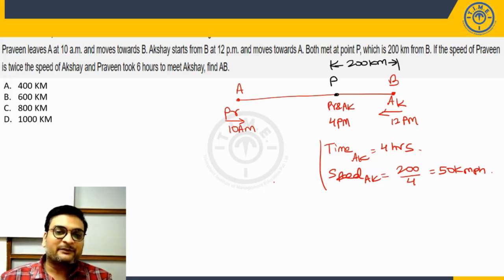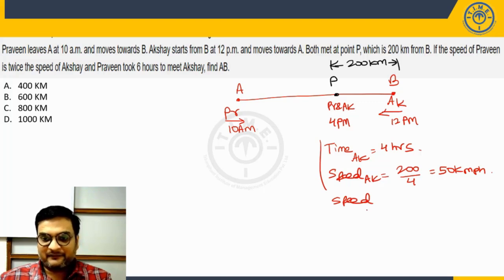So speed of Akshay is 50 kilometers per hour, we immediately note speed of Praveen will be twice of that. So it is going to be 100 kilometers per hour.